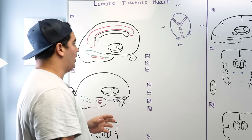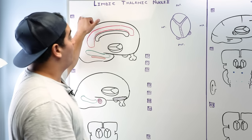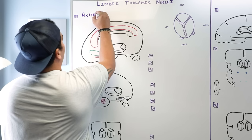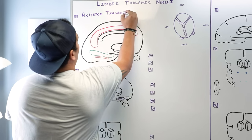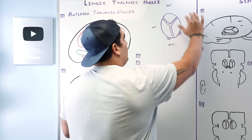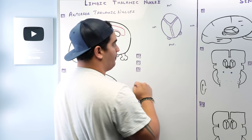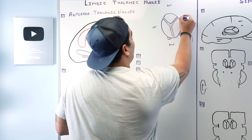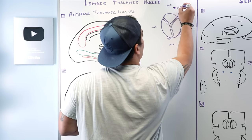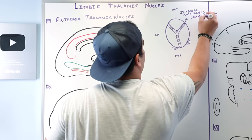Let's start with the first couple of thalamic nuclei. There are three particular thalamic nuclei involved in the limbic information relay. If you look at the diagram, we have the thalamus — an egg-shaped structure divided into three different nuclear groups by a Y-shaped structure called the internal medullary lamina, sometimes referred to as the medial medullary lamina.